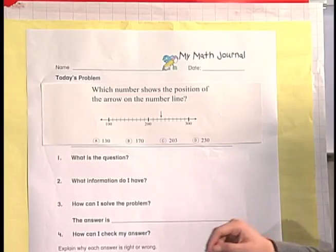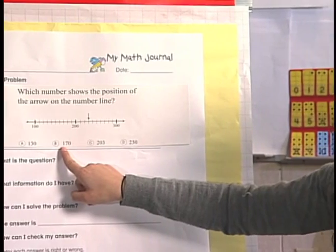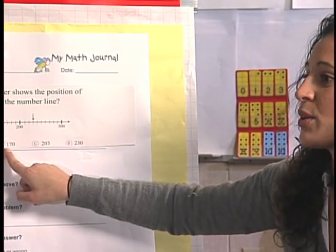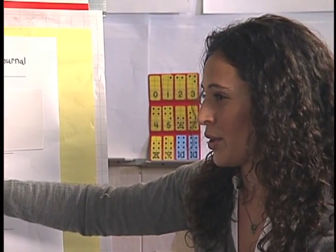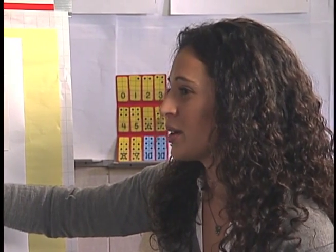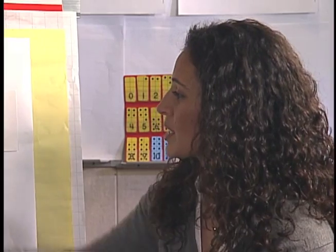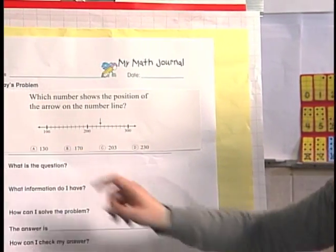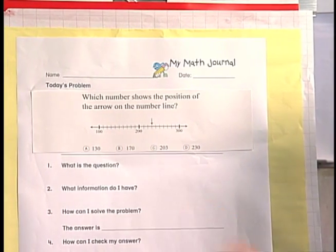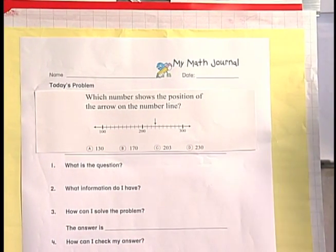Who has B? Raise your hand up high in the air if you have B. Carmen, read the number to me. 170. Is it right? Is it wrong? It's wrong because the arrow isn't by the hundred. The arrow isn't by the hundred. It's not by the hundred. Good answers, you guys. Really good answers.